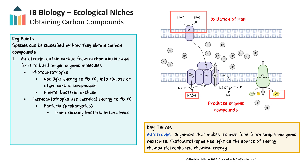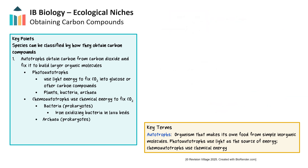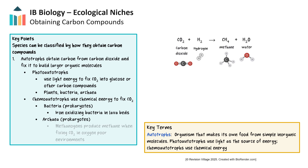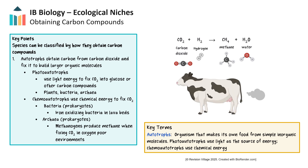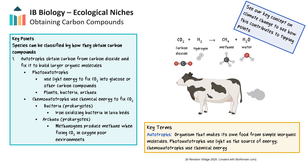Methanogenic archaea produce methane by combining hydrogen and carbon dioxide to generate ATP. These live in oxygen-poor environments like peat bogs, animal digestive tracts, and the deep ocean floor, where they can produce methane bubbles under the sea bed.